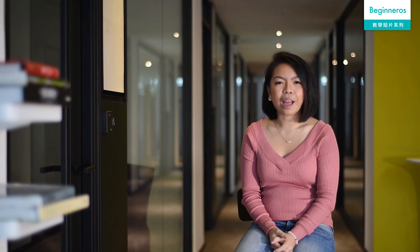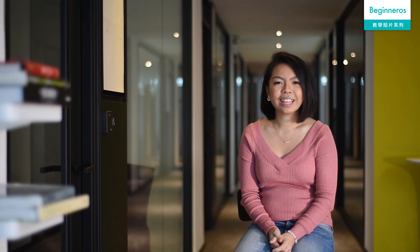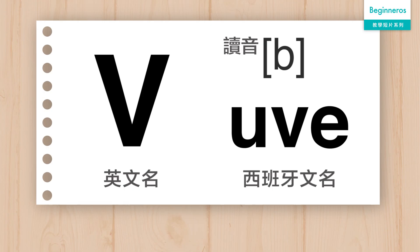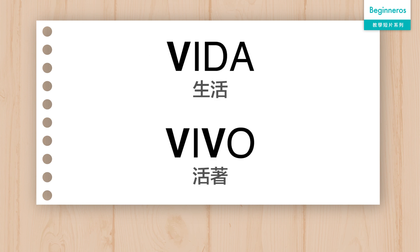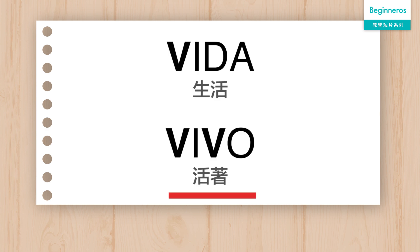Next is V. In Spanish, V is pronounced the same as B. So there's no difference in pronunciation between V and B. For example, Vida, Bevo.